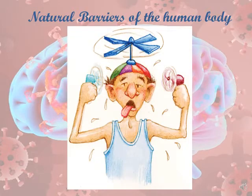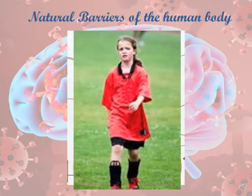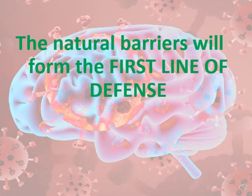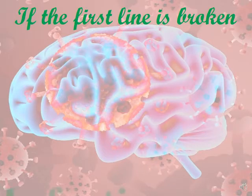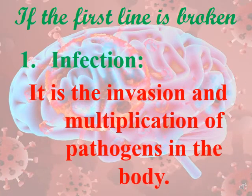The natural barriers form the first line of defense in the human body. So the question is: what would happen if these natural barriers were broken? What will be the consequences if the first line of defense is broken?